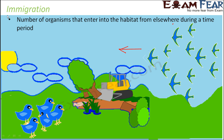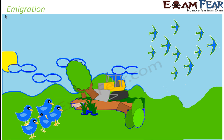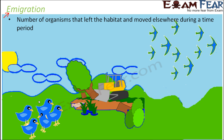I for in — so immigration means birds coming in. Similarly, emigration would mean birds going out. During favorable conditions, these birds might go back, so when they leave this area, the population would decrease. We can say that the number of organisms that left the habitat and moved elsewhere during a time period is called emigration.